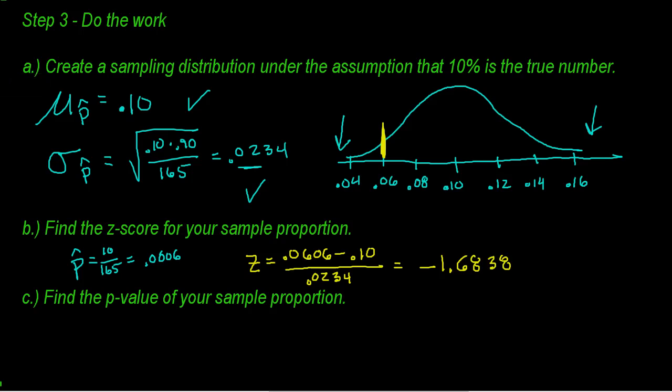I'm going to take 0.0606 minus the center 0.10 divided by the standard deviation. This will tell me exactly how many standard deviations below the mean my sample is. I get negative 1.6838. By the eye test, that doesn't really seem to be that low of a sample. It's lower, but honestly it's really not that low.